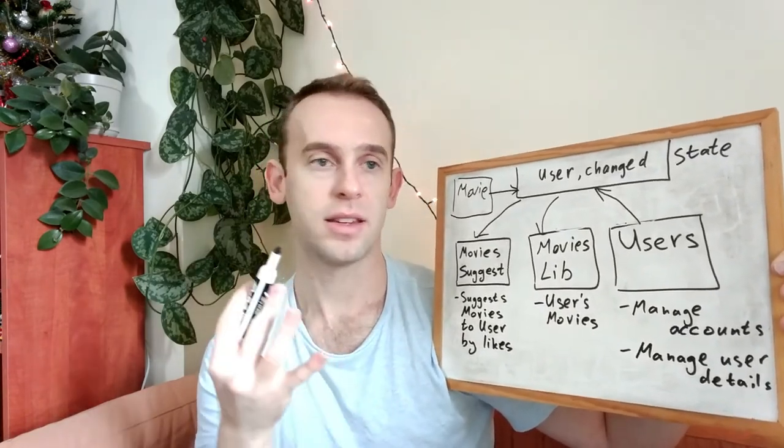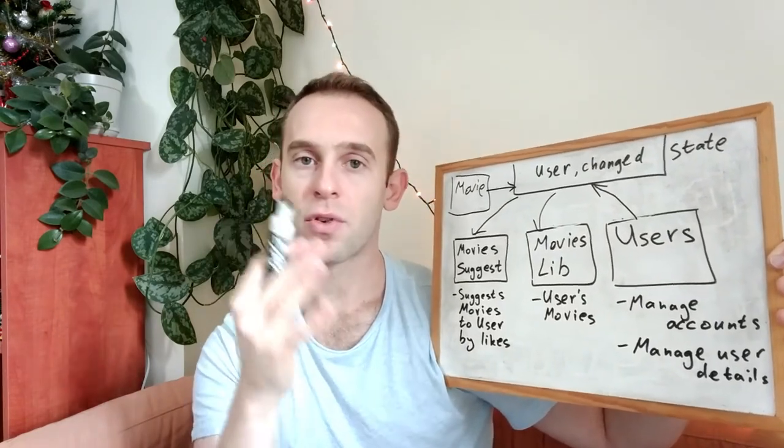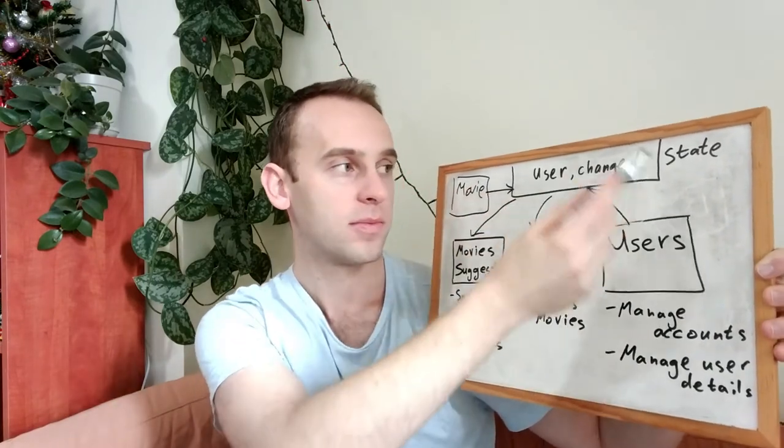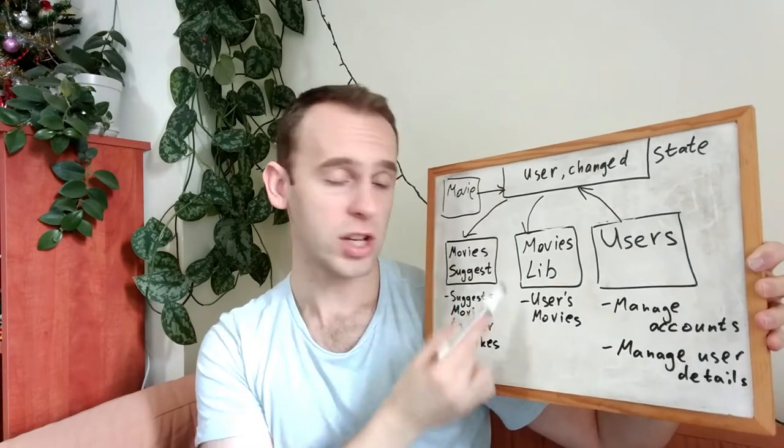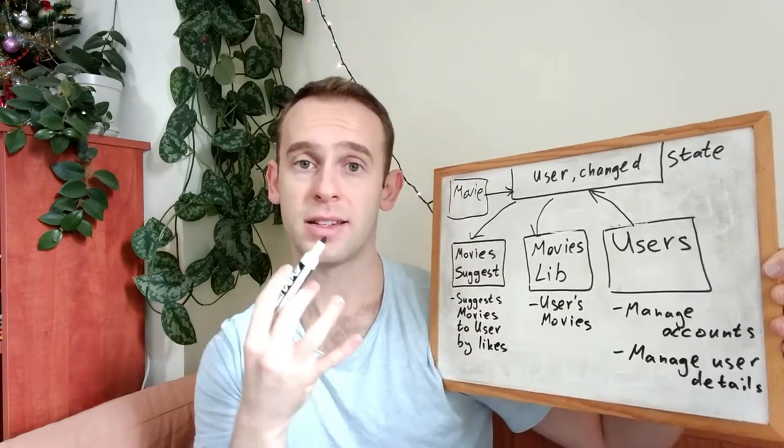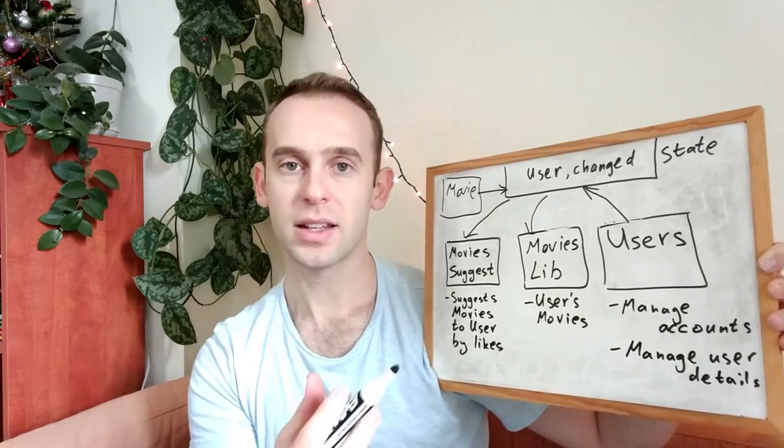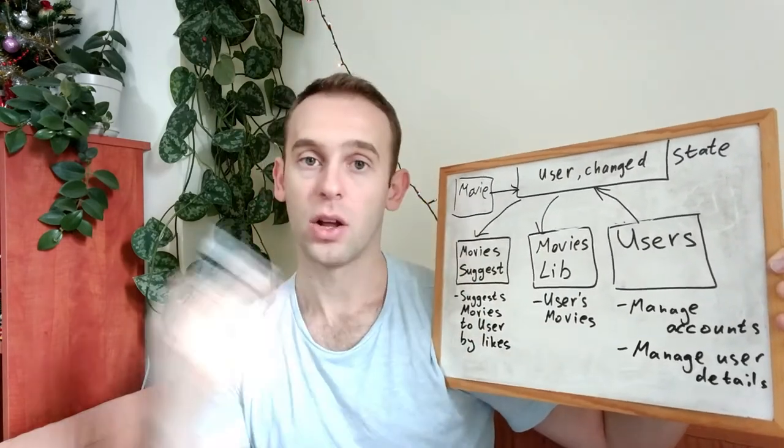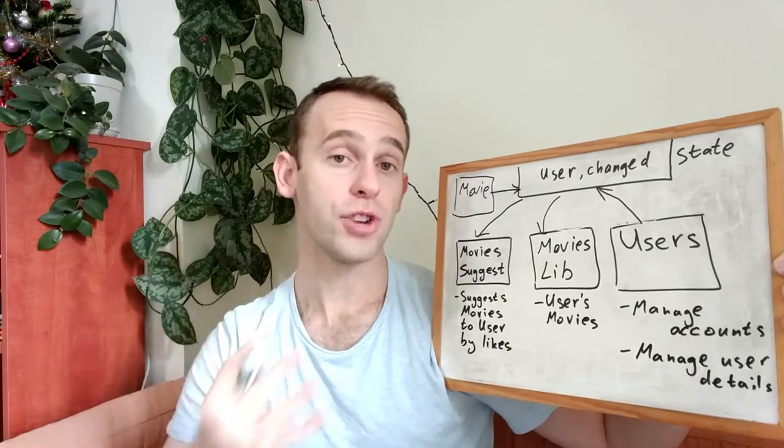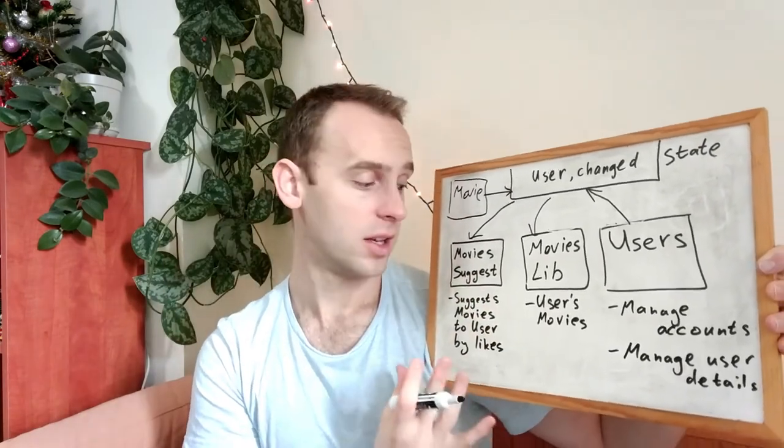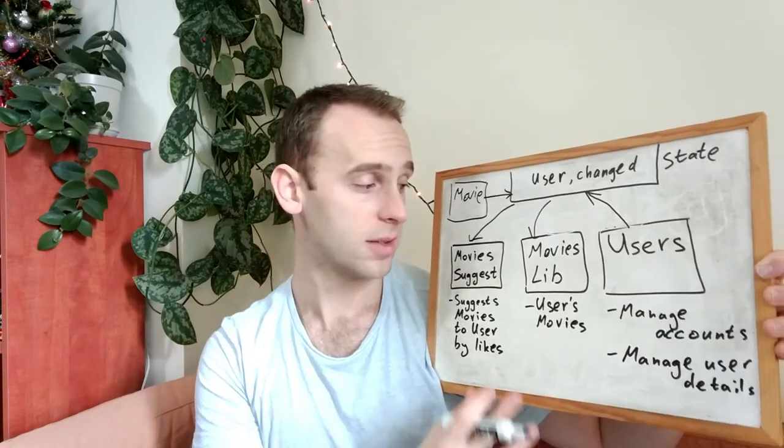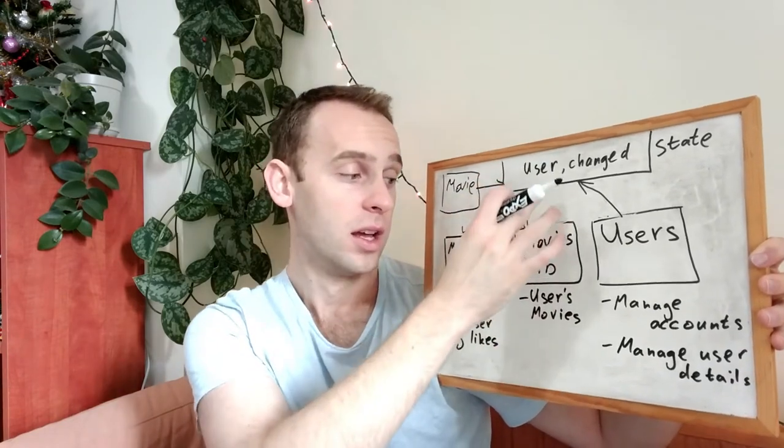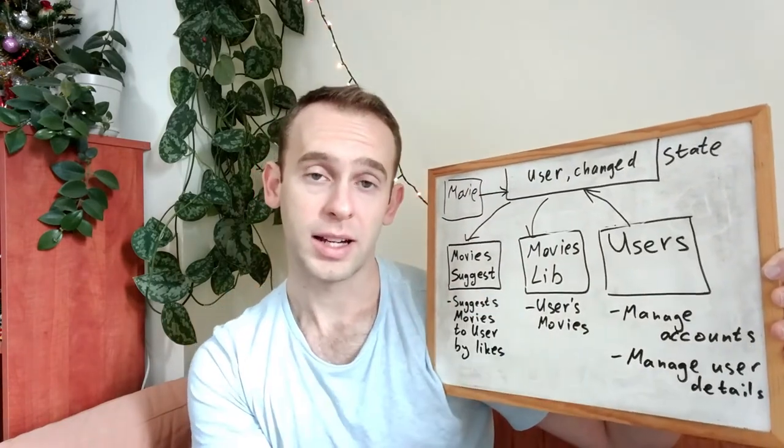And this way the state is changing and the suggestion module now, when he sees that another movie was added to the likes list or the number of movies that the user liked has changed, it will react and load those movies, recalculate the suggestions and will show different suggestions. The movies libraries module can react to it and load the new liked movie to the liked playlist.